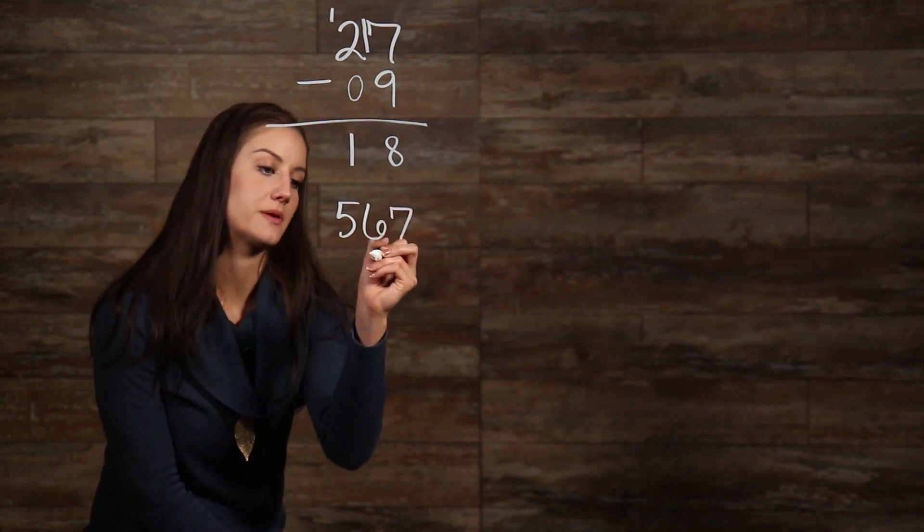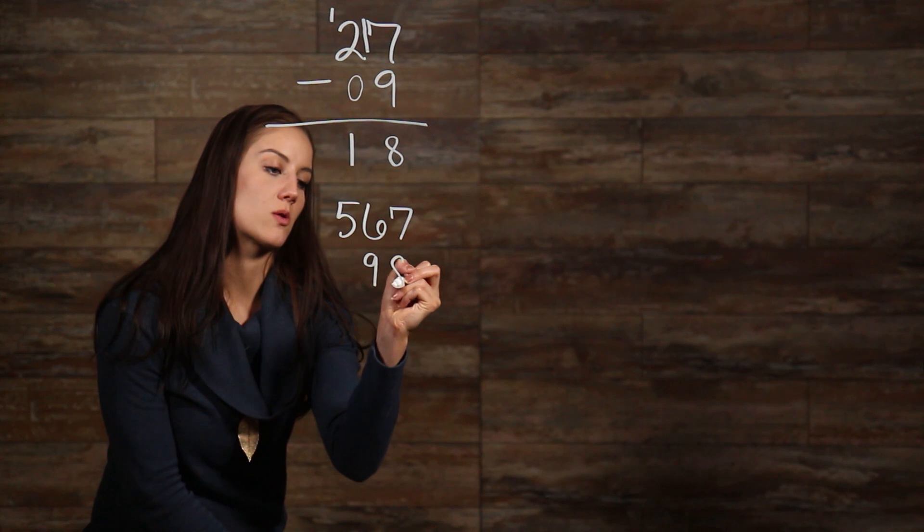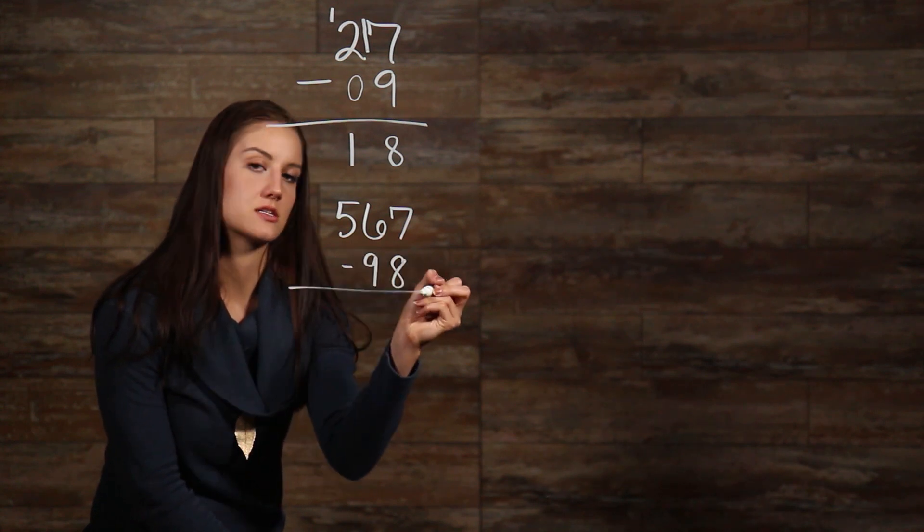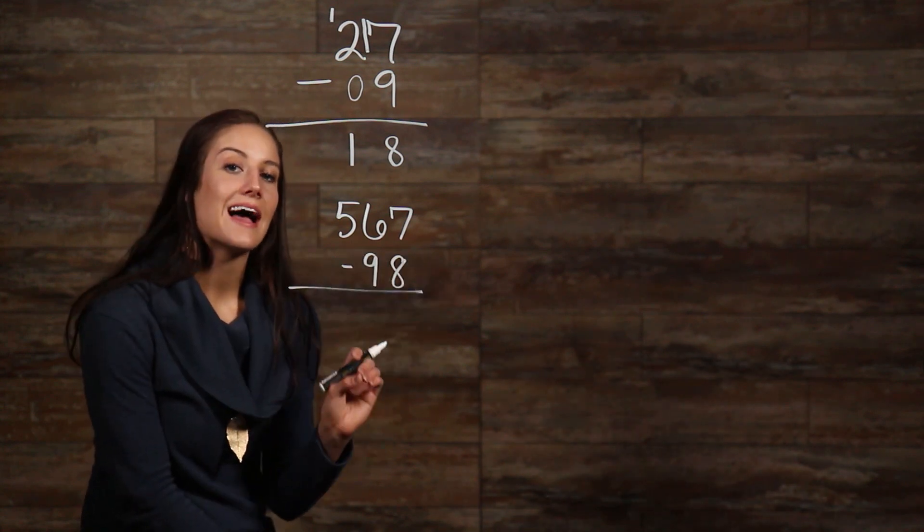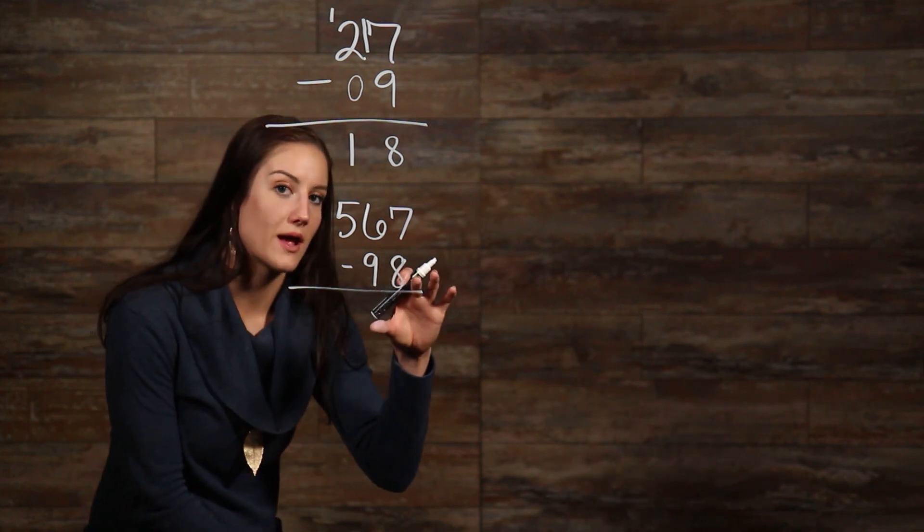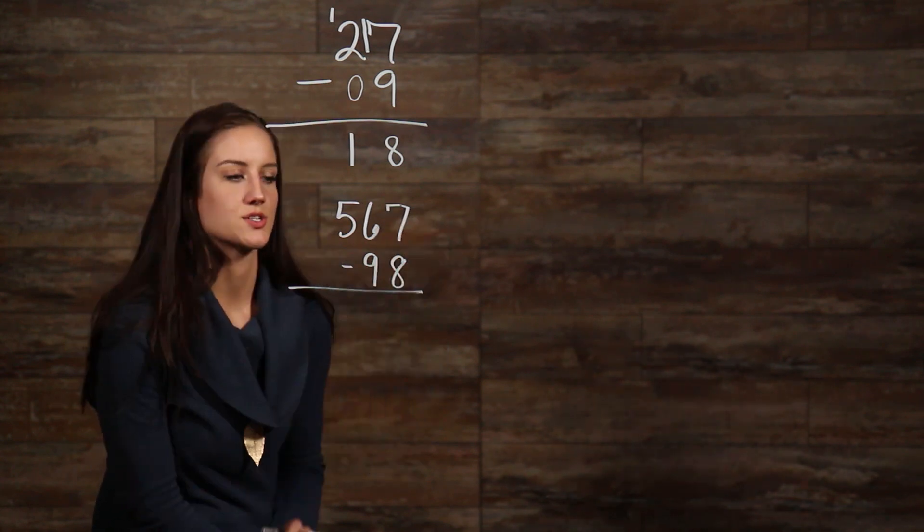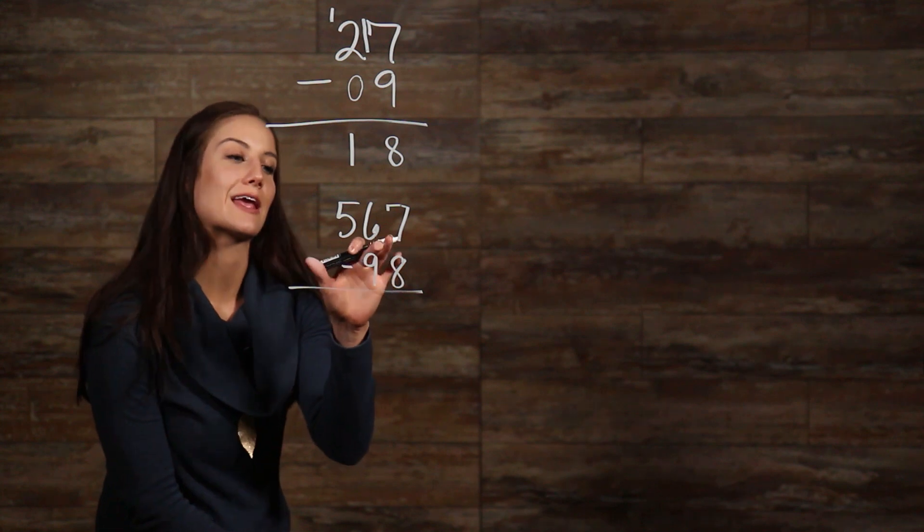So, if it's 98, that's going to be in our tens place, and our 8 is going to be in our ones place. So, we're subtracting. Like in our last example, we are trying to take something bigger away than what we have here. So, we need to borrow from our 6 here, which means we're taking 1 away from it.